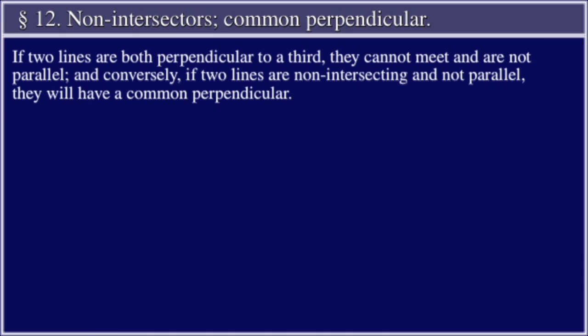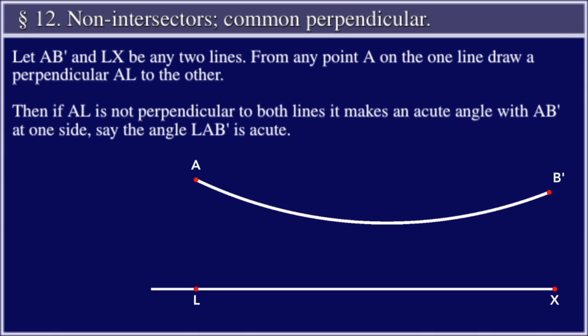Let AB' and LX be any two lines, figure 22. From any point A on the one line, draw a perpendicular AL to the other. Then, if AL is not perpendicular to both lines, it makes an acute angle with AB' at one side. Say the angle LAB' is acute.